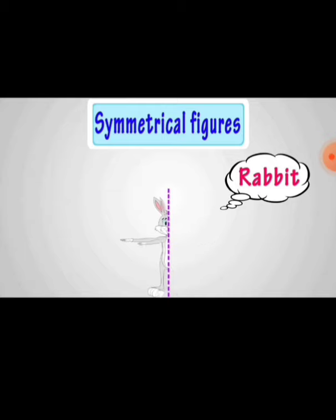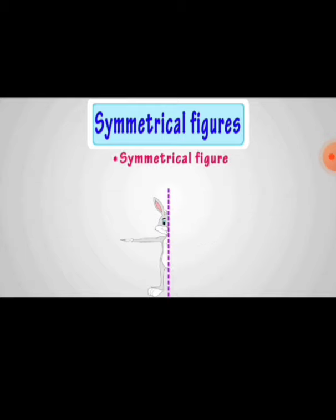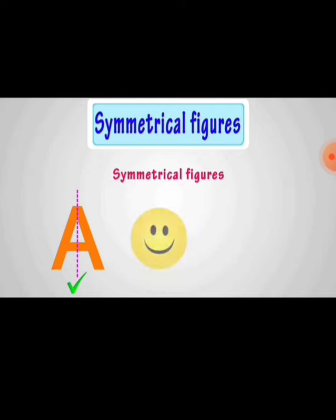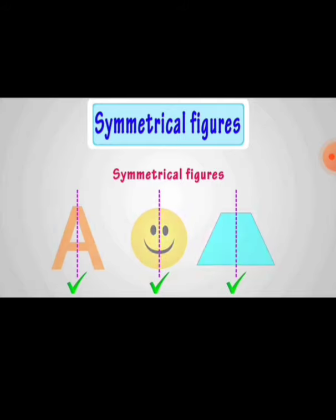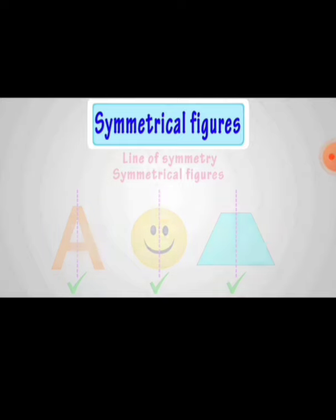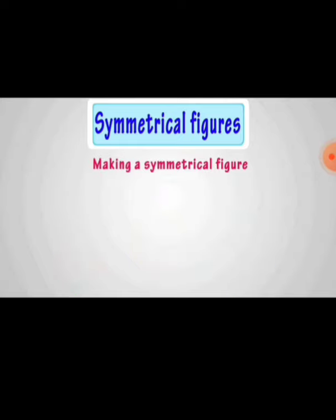This straight line is called axis of symmetry or line of symmetry. This is also an example for symmetry and for a symmetrical figure. For example, observe the English capital letter A: when we divide this figure by using a line of symmetry, it looks like the same size and same shape.